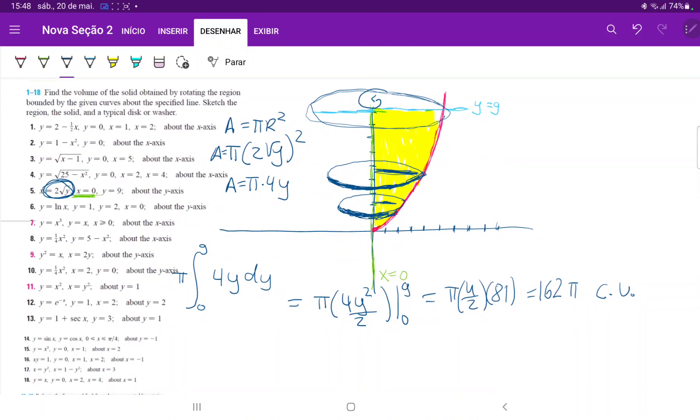So all we did was we drew these curves, we found the area, and then we revolved around the y-axis, as it tells us to. And then we realized, hey, this makes disks, right? And the radius of the disks, because we want to sum up these areas, the radius is always changing, and it changes as a function of y.